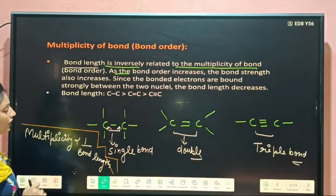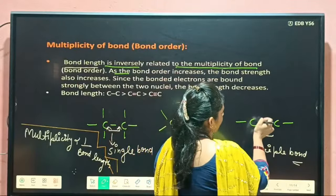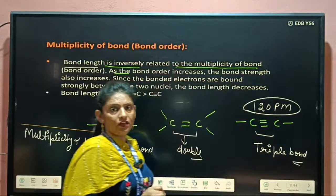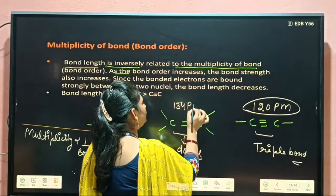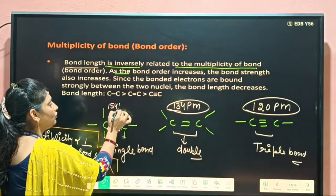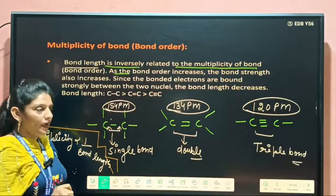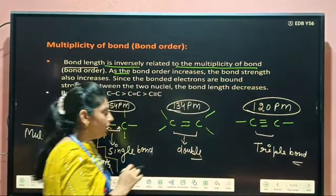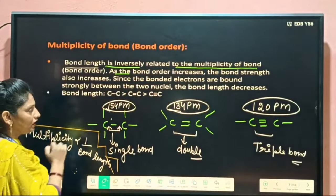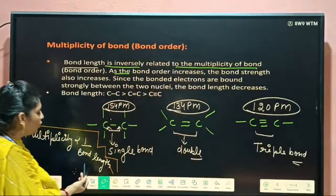If multiplicity increases, then bond length decreases. For a carbon-to-carbon triple bond, bond length is around 120 picometers. For a carbon-to-carbon double bond, bond length is around 134 picometers. For a carbon-to-carbon single bond, bond length is around 154 picometers. Bond length is maximum in the case of a single bond and minimum in the case of a triple bond. So as multiplicity increases, bond length decreases.